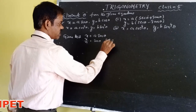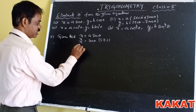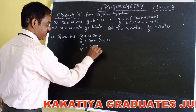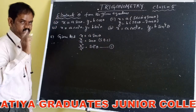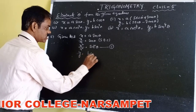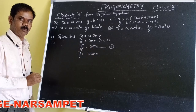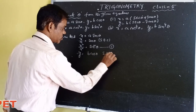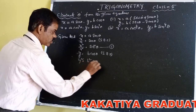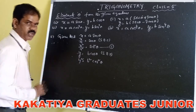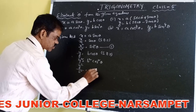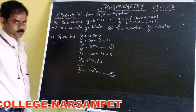Squaring both sides, we get x²/a² = sin²θ. Let us consider this as equation number 1. The second given equation is y = b·cosθ. Again squaring both sides, we get y²/b² = cos²θ. Let us consider this as equation number 2.